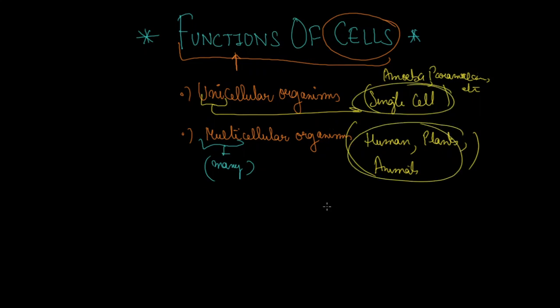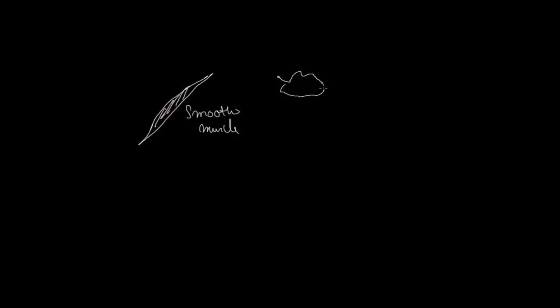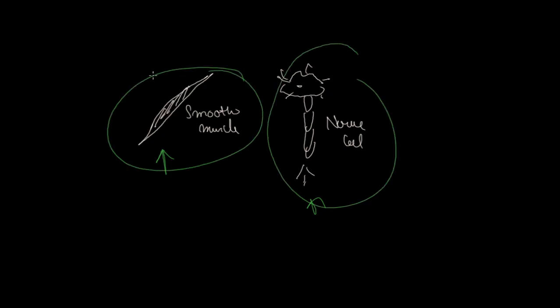What is the function of the cell? The shape of the cell or the size of the cell tells you its specific function. For example, in our human body there is a muscle cell. There is also a cell we call the neuron, which is a nerve cell. So different cells can have different shapes, and those shapes relate to their different functions.